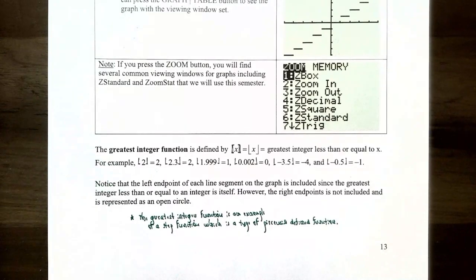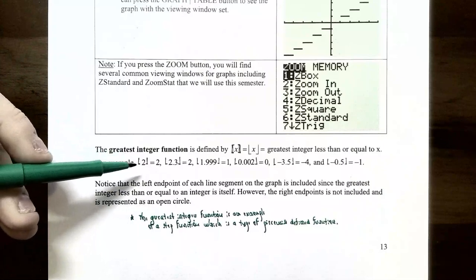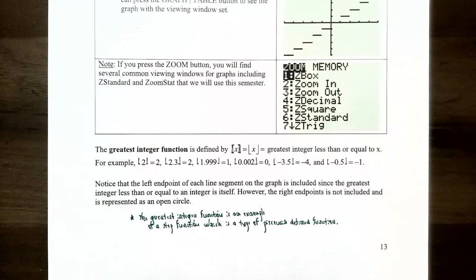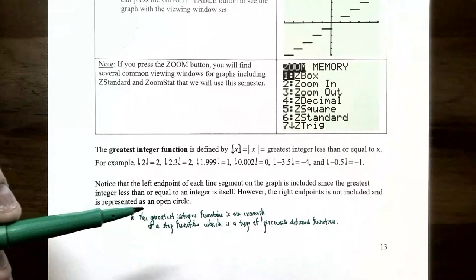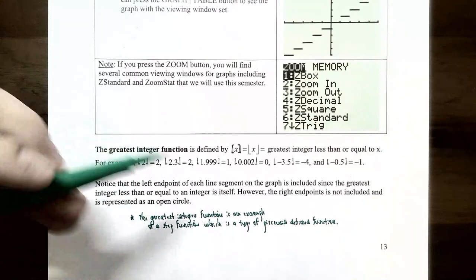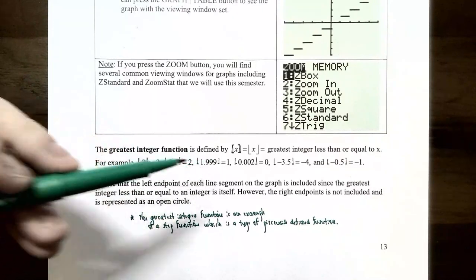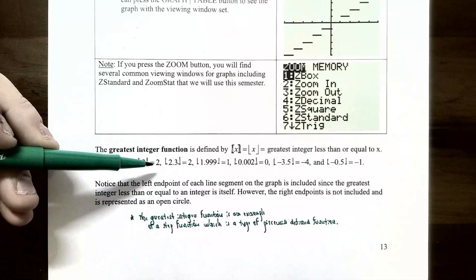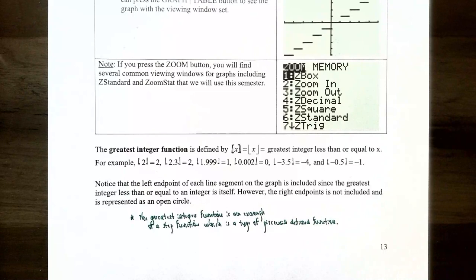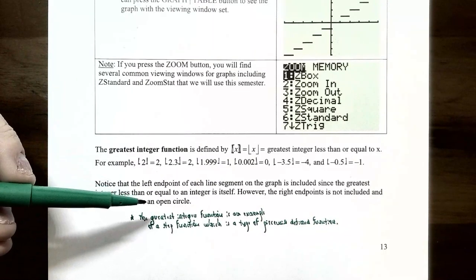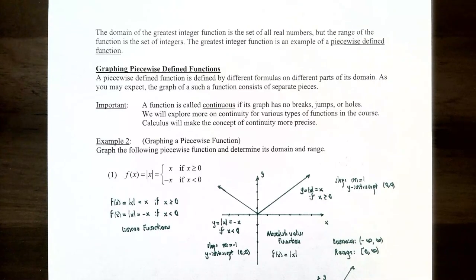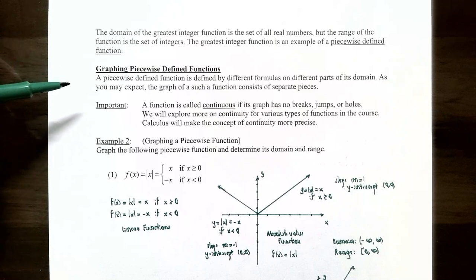On the graph, the left endpoint of each line segment is included, since the greatest integer of an integer is itself. The right endpoint is not included — as you approach 2 from the left, the output jumps up to 2 — shown as an open circle. The domain is all real numbers, but the output values are only integers. The greatest integer function is both a step function and a piecewise defined function.